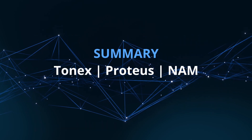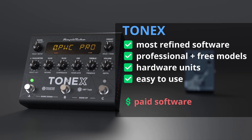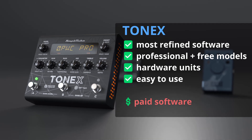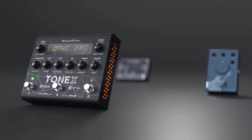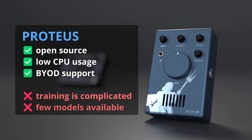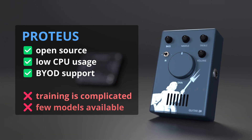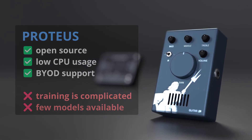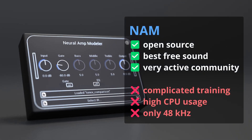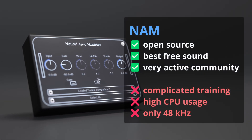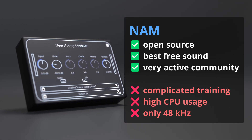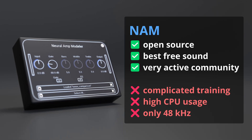To wrap things up, here's my new summary. The Tonex is the most refined software with a lot of professional and free models. It is paid software and it is easy to use. The Proteus is an open source project. It has the lowest CPU usage. The training process is a little complicated, but you can easily get good results. It also has BOID support. The NAM has the better sound out of the two open source projects, but it comes at the cost of high CPU usage. Creating your own models is also a little complicated, but it has a very active development community and great advances can be expected.